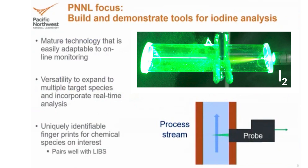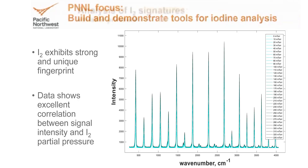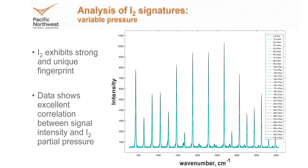With our proof of principle demonstration, we wanted to knock it out of the park. We knew that with Raman spectroscopy we would have beautiful signatures for iodine. You can actually see a cell right here — this is our Raman probe integrating the cell that contains I2, and you can see that strong, beautiful spectral response. Looking at the actual data from that Raman system, this is a Raman spectrum. We've got a strong signature and a unique signature, which means we can uniquely identify the presence of I2 in the gas phase.